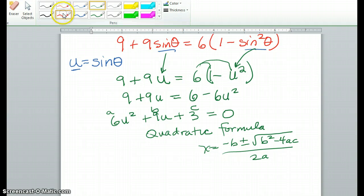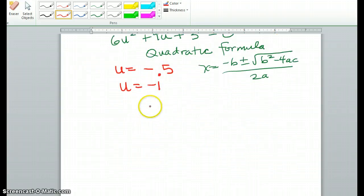Okay, so I ended up with u equals negative 0.5, or negative 1 half, and u is equal to negative 1. So what is u? Remember, u is sine theta. So now you're just going to plug it back in. So you're going to find when sine theta is equal to negative 1 half, instead of putting 0.5, and then you're also going to find when sine is negative 1.